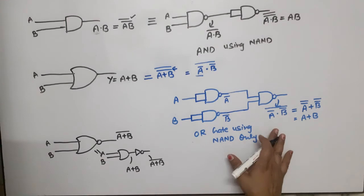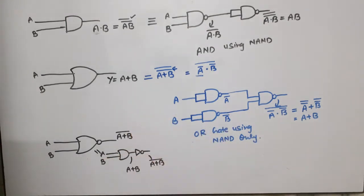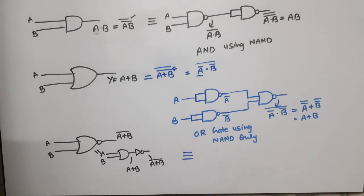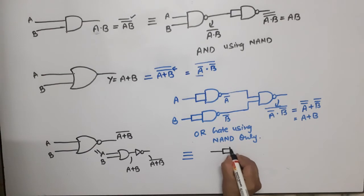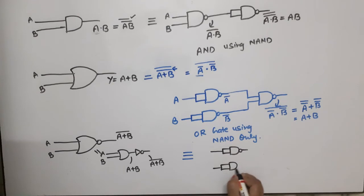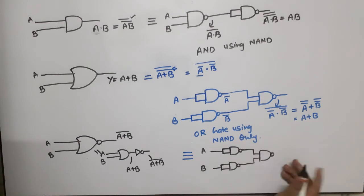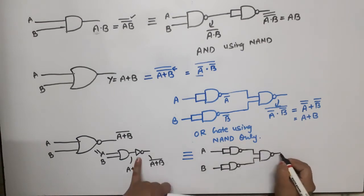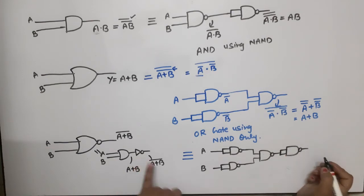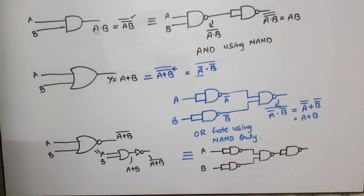We already have OR gate using NAND. Now we draw NOR gate using NAND. First we build the OR gate: one NAND gate with input A, second NAND gate with input B, and their outputs go into a third NAND gate — this is OR gate. Then beyond this, we need one inverter: apply the output to a NAND gate with both inputs shorted.